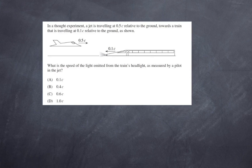Question number two. In a thought experiment, a jet is traveling at 0.5c relative to the ground towards a train that is traveling at 0.1c relative to the ground. What is the speed of the light emitted from the train's headlight as measured by the jet? Again, the speed of light is always measured at c, so the only possible answer is d.